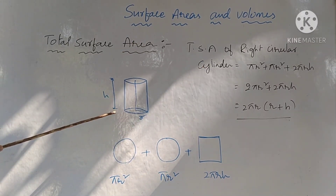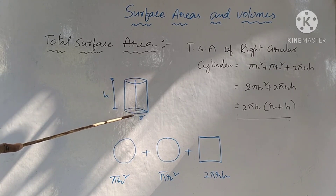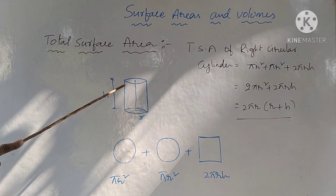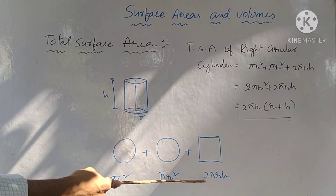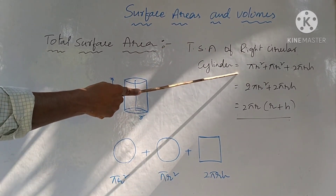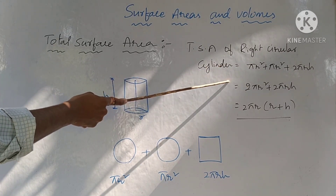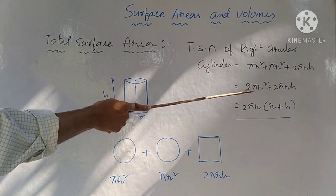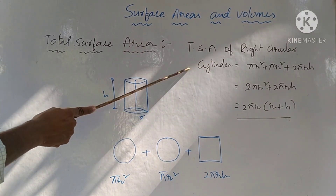Observing the right circular cylinder again: it consists of two circles (top and bottom), each with area πr², and one curved surface area of 2πrh. Substituting: TSA = πr² + πr² + 2πrh = 2πr² + 2πrh = 2πr(r + h). This is the total surface area formula.